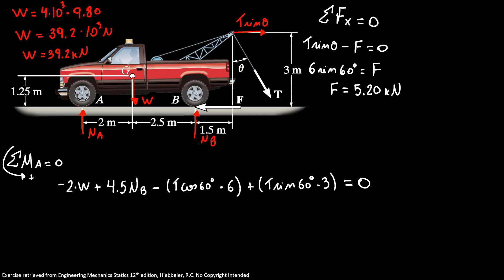So now we have 4.5 normal B equals 2 times 39.2 plus 6 times 6 times cosine of 60, minus 6 times 3 times sine of 60. So doing our math, we have the normal B is equal 24.9 kN.